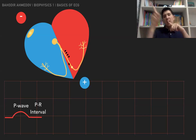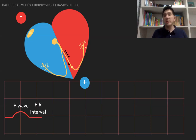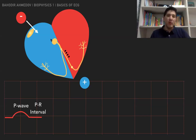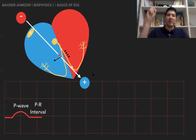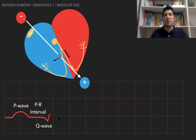The lead is the vector which connects the positive and negative electrodes. We draw the dipole vector here and need to find its projection. The projection is this red vector. This red vector is pointing in the direction of the negative electrode. It means we are going to have a negative deflection. This wave is called the Q wave.